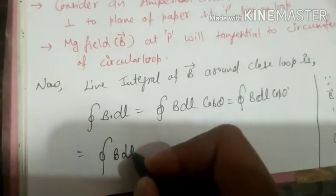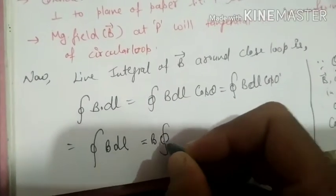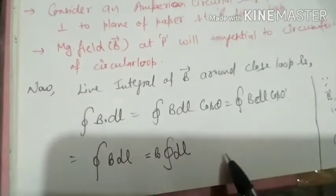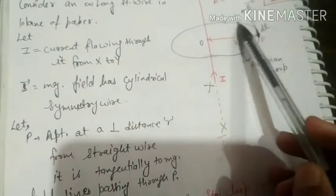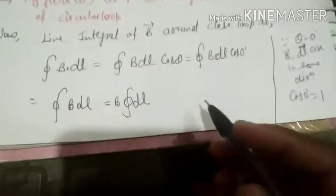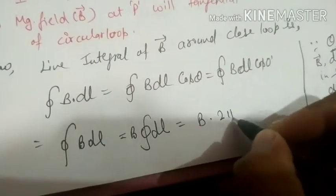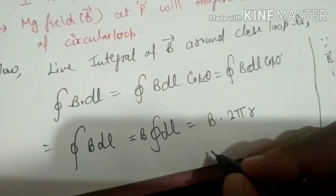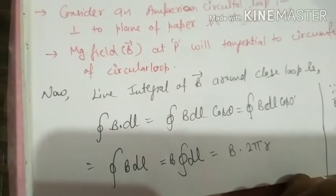B times dl. If we take B out, then how much is the integral of dl? If we collect all dl around the loop, it becomes 2πr. So what do we get? B into 2πr. So B into 2πr.